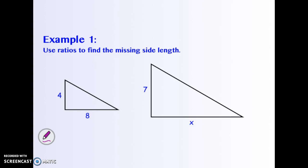But something to note is that if you take the ratio of two side lengths within a triangle, 4 to 8, the ratio of the corresponding side lengths in the other triangle, 7 to X, has to be the same.